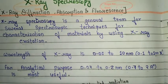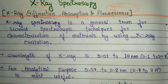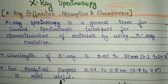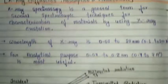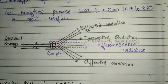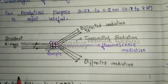So these are the basic introductions about X-ray spectroscopy. Now we are going to discuss the diagrammatic representation of the mechanism of X-ray spectroscopy. In this diagram we will discuss about the mechanism.